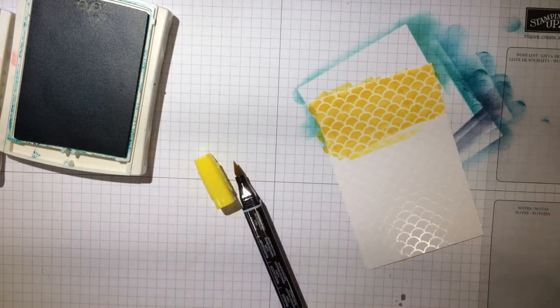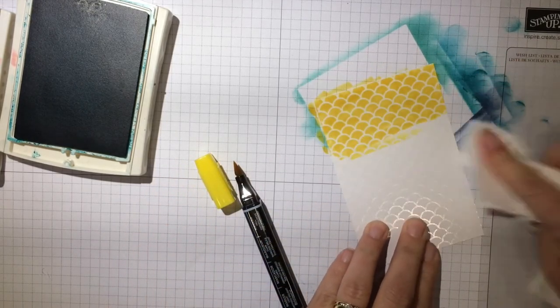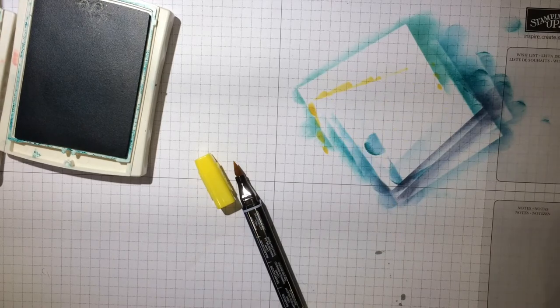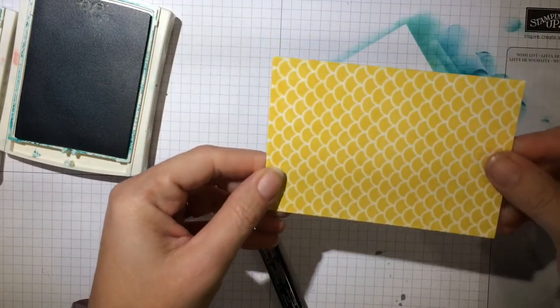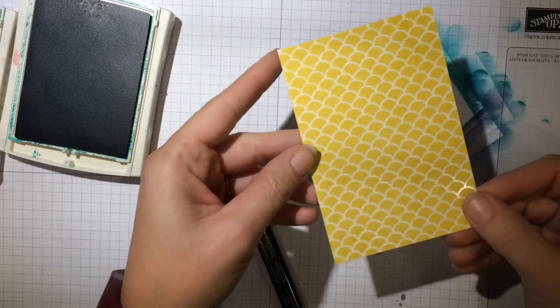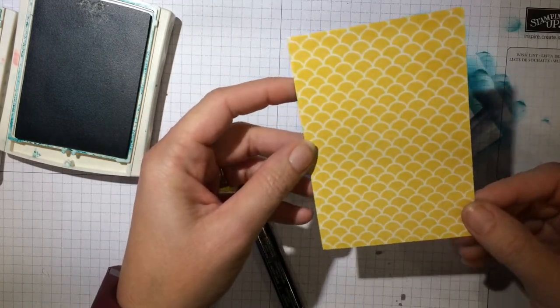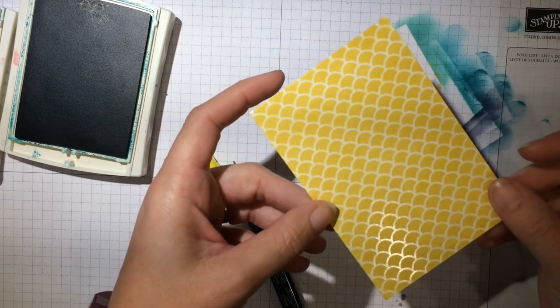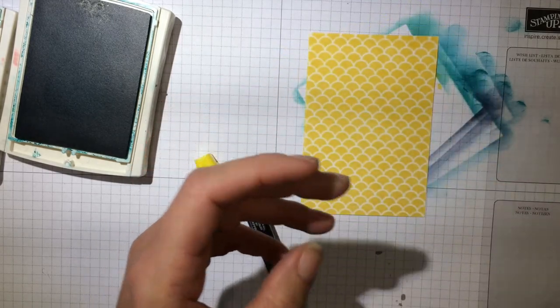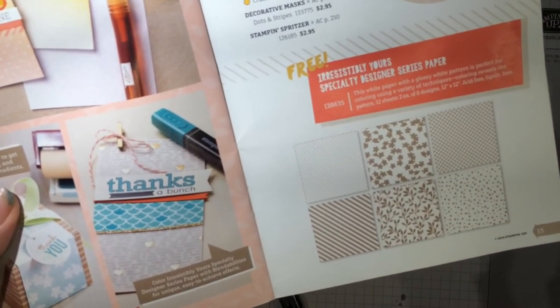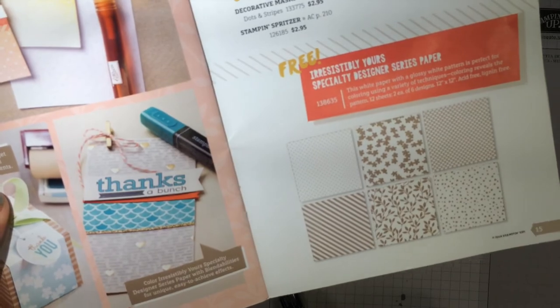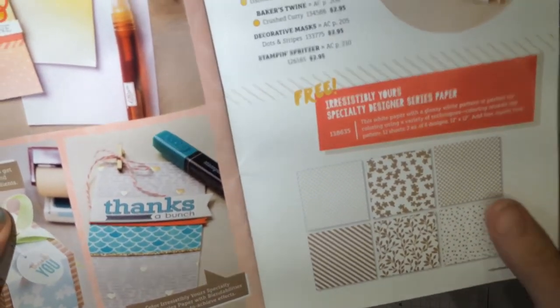And then you just take your napkin again and wipe off. Let me show you the one I finished. I feel like this gave a great solid look. You can't really tell that it was inked. It looks like it was professionally printed that way. So just another option for this really cool paper. Again, you can only get it by spending fifty dollars and then you get it for free. So it's called the Irresistibly Yours Specialty Designer Series Paper.